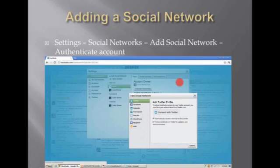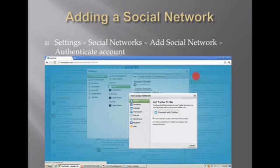Once you sign up for a Hootsuite account and create a username and password, you start adding your social networks. You go to the settings button on the left-hand side, hover over social networks, click add social network, and authenticate your accounts. You do have to have access to the usernames and passwords for the Twitter, Facebook, and LinkedIn accounts. They also support Foursquare and other social networks, and hopefully they'll add Google Plus in the future.